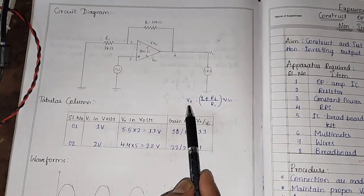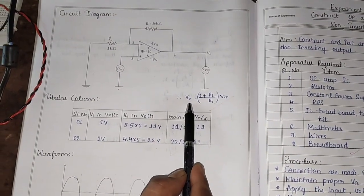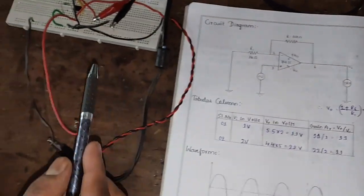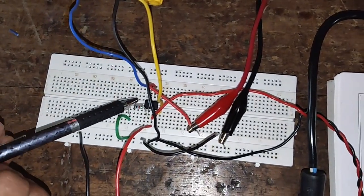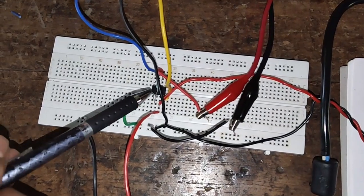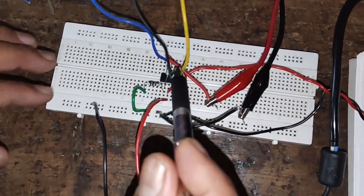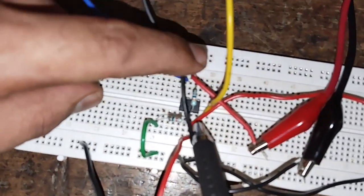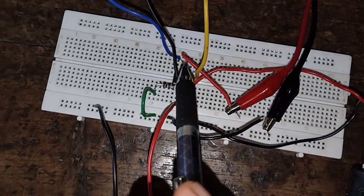Now, let's see how this circuit can be constructed on a breadboard. Here on the breadboard, we have connected the op-amp 741 IC. The 1 kilo ohm resistor is connected to pin number 2, and the 10 kilo ohm resistor is connected between pin numbers 2 and 6.